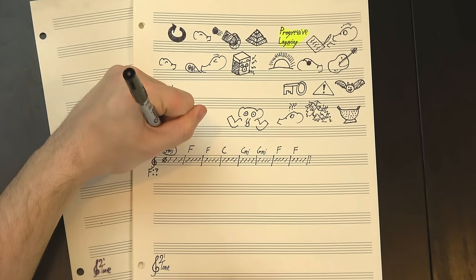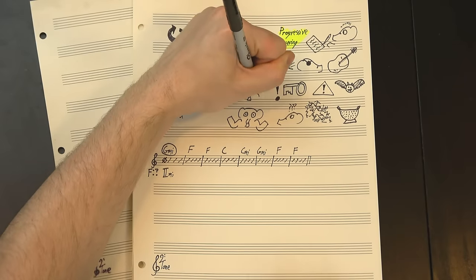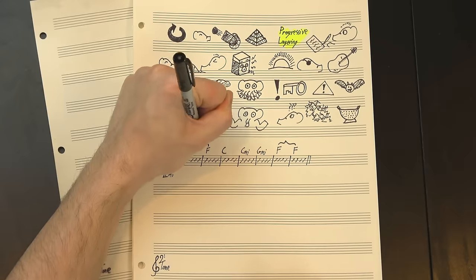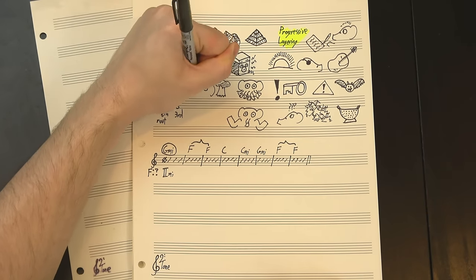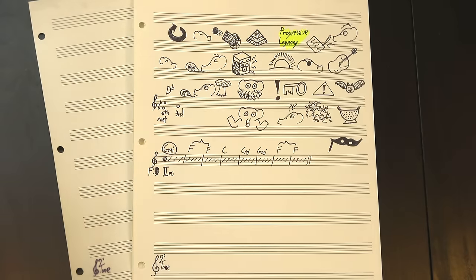The section actually starts on G minor, which in this analysis would be the II chord. Starting on the II is interesting, because coming out of the atonal section we just heard, it almost implies that G is the root, but looking at the rest of the section, and especially the melody, which ends with a big resolution to F, that doesn't seem to be the case. Still, the fakeout is interesting.